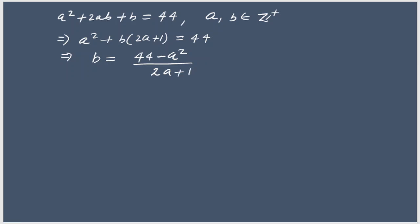We want both a and b as positive integers. For b to remain positive, we need 44 − a² > 0, so a² < 44. The maximum perfect square less than 44 is 36 = 6². So a can only take values from 1 to 6. We check each case to see which gives an integer value of b.